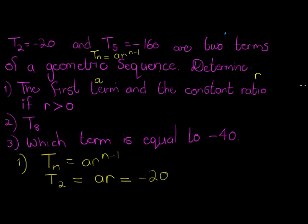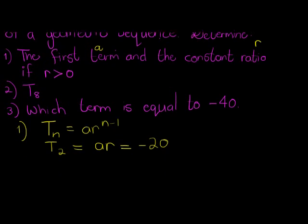And the second one is that term 5 equals negative 160. So if I take term 5 equals a·r^(5-1) which gives me 4, equals negative 160.